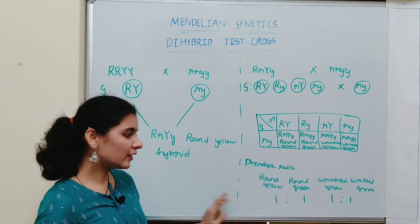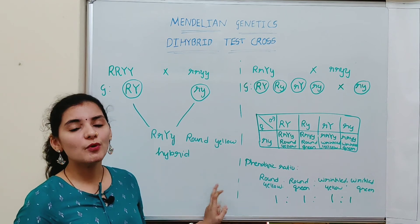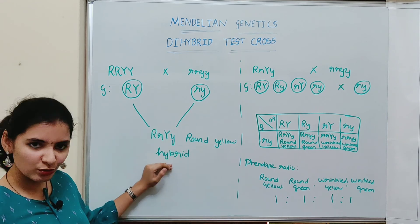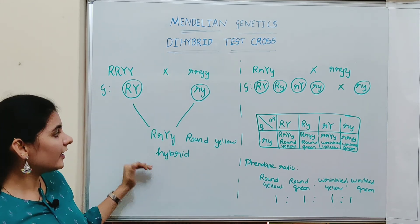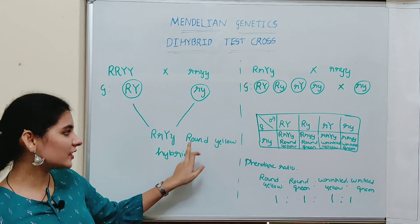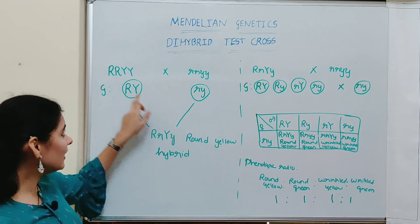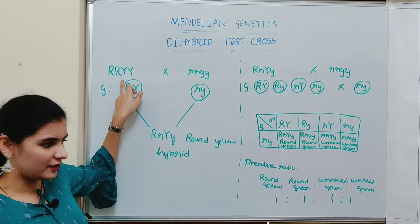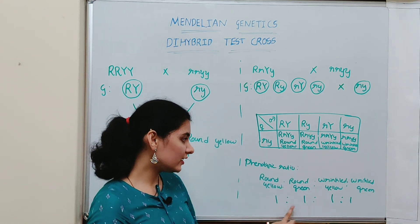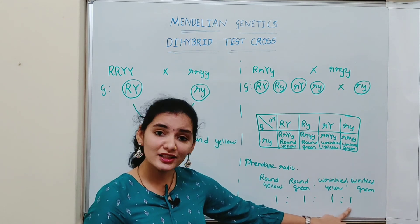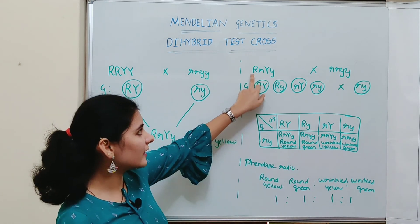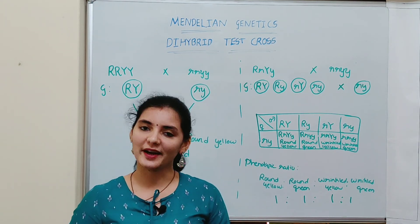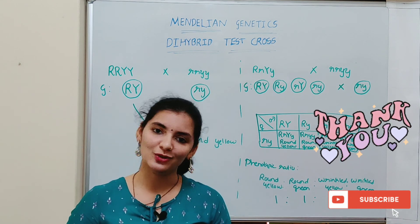So you get two different results when you consider the two possibilities of the test cross. If you cross the plant of unknown genotype with a double recessive parent and get all plants producing round and yellow seeds, you can conclude that the genotype is homozygous dominant. If you get a phenotypic ratio of 1:1:1:1, then you can conclude that the genotype is heterozygous. That is exactly how Mendel did the test cross to find out the genotype of an unknown plant.